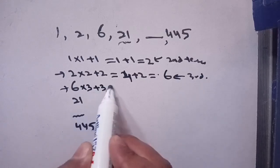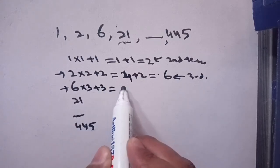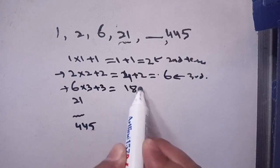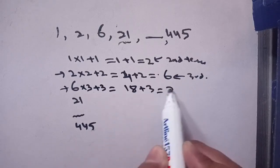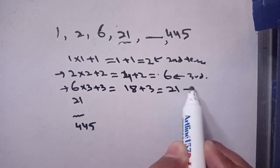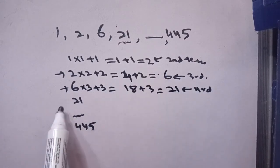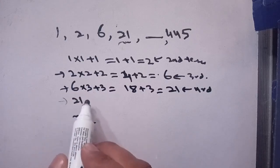Now multiply the third term by 3 and add 3. It becomes 6 times 3 equals 18, and plus 3 equals 21. This is our fourth term. So the fifth term will be made from the fourth term using the same pattern.